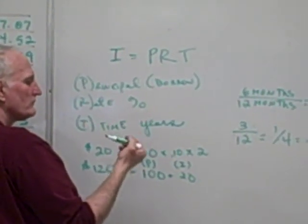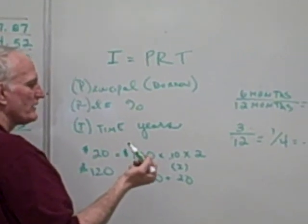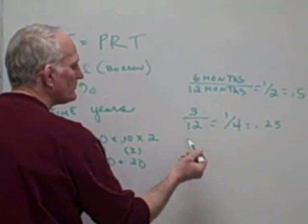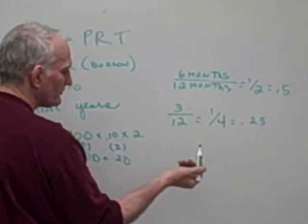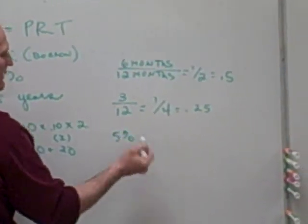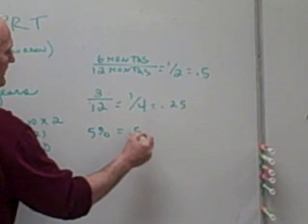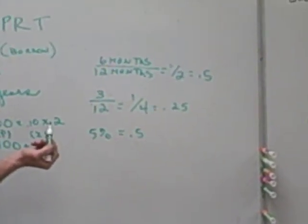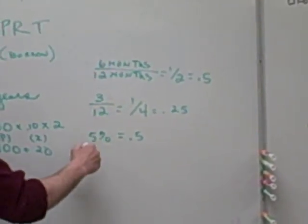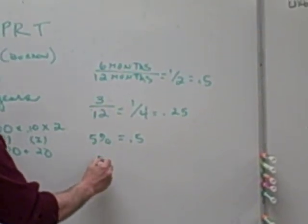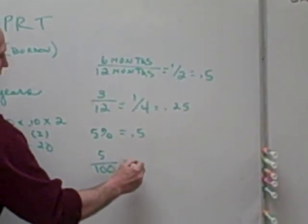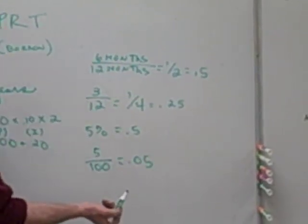Be careful when making your interest calculations that you express time in years or as a fraction of years. Also, students sometimes have trouble writing percent — for example, sometimes they write 5% as 0.5, which would actually be 50%. Remember that 5% means five parts of a hundred, or 0.05.